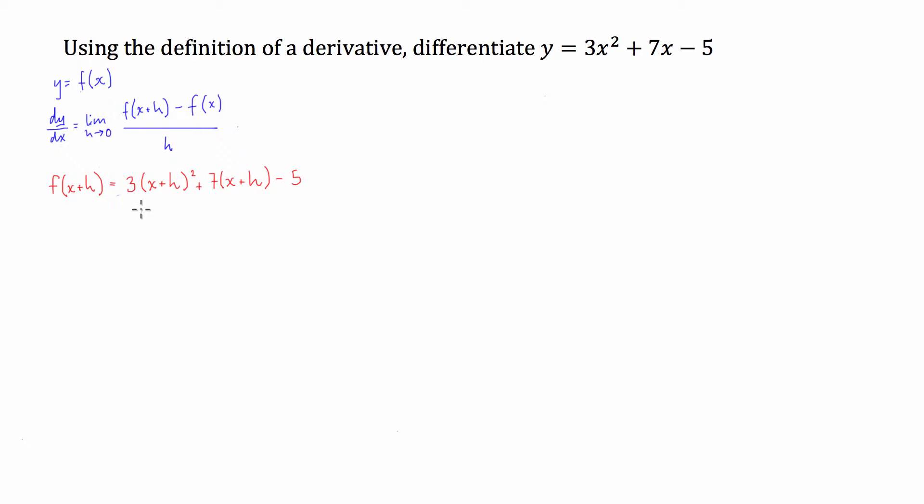Now if we multiply these brackets out, we're going to have 3. We're still going to have a bracket in this one because we've got to have x² plus 2xh plus h². And that's plus 7x plus 7h minus 5. And finally with this one, we can multiply out that bracket. So this is going to be equal to 3x² + 6xh + 3h² plus 7x plus 7h minus 5.